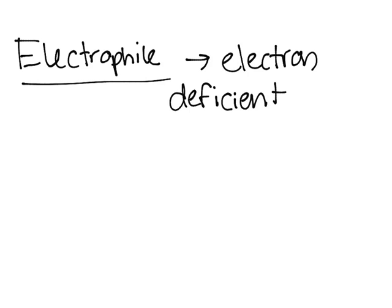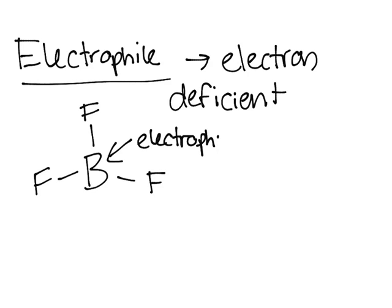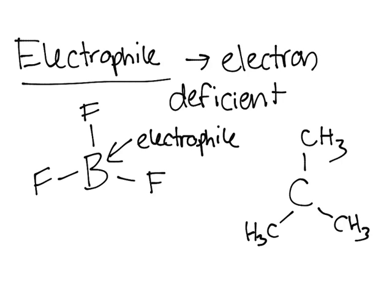Something with a positive charge or a partial positive charge. For example, BF3, the boron here will be the electrophile. Another example is a carbocation, CCH3, H3C, CH3, with a positive formal charge. The carbon right here will be the electrophile. I'll circle that in red.